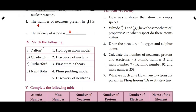Section 4: Match the following. Dalton — first atomic theory. Chadwick — discovery of neutrons. Rutherford — discovery of nucleus. Niels Bohr — hydrogen atom model. The matching order is D, C, A, B.